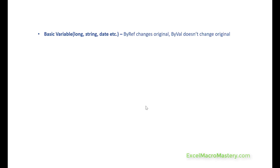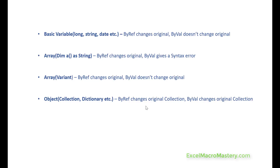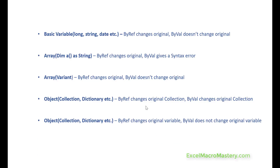So let's do a quick recap which will make this much clearer. For a basic variable, ByRef will change the original, but ByVal does not change the original. For an array declared using parentheses, ByRef will change the original, but ByVal will give us a syntax error — so we cannot use it. For an array of the variant type, ByRef changes the original and ByVal doesn't change the original, so this works like a standard variable. For an object such as a collection or a dictionary, ByRef changes the original collection, and ByVal will also change the original collection — so whatever way you pass a collection to a sub, if you change that collection it will be changed. However, the variable of the collection — if you set the variable to another or new collection — then if you're using ByRef this will change the original variable, and if you're using ByVal it does not change the original variable.